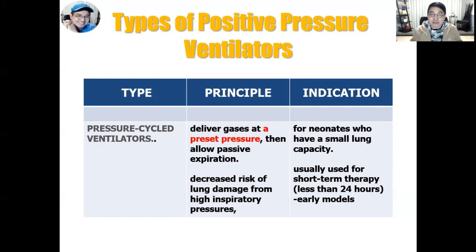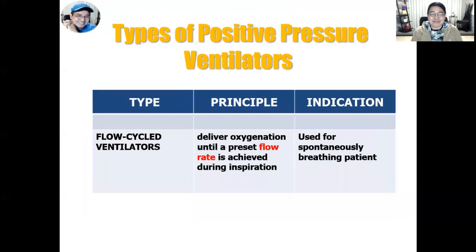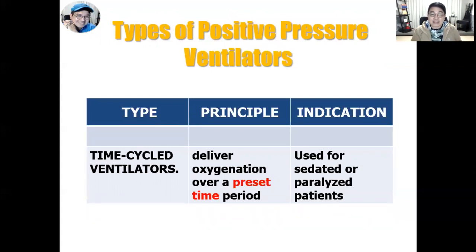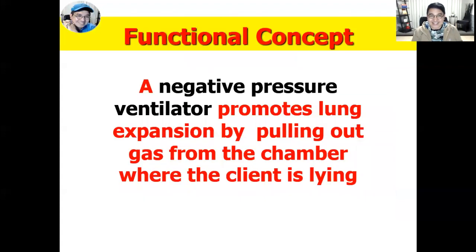Flow cycle ventilators deliver oxygenation until a preset flow rate is achieved during inspiration and are indicated for clients who are spontaneously breathing. Time cycle ventilators deliver oxygen over a preset time period and are used when the patient is sedated and the duration of ventilatory assistance can be anticipated. Time cycle ventilators are also used for clients who are paralyzed.